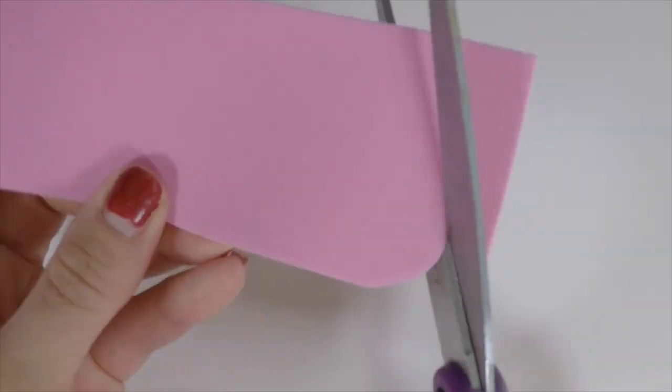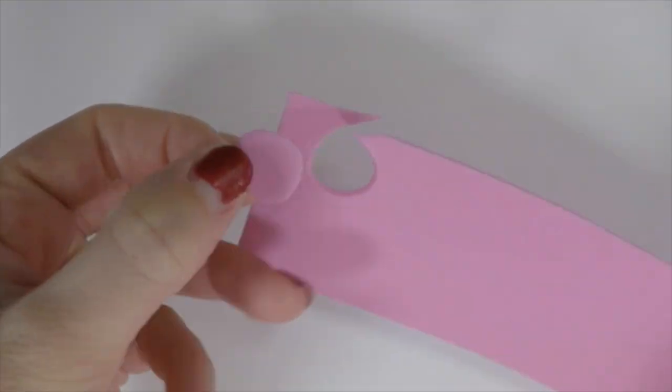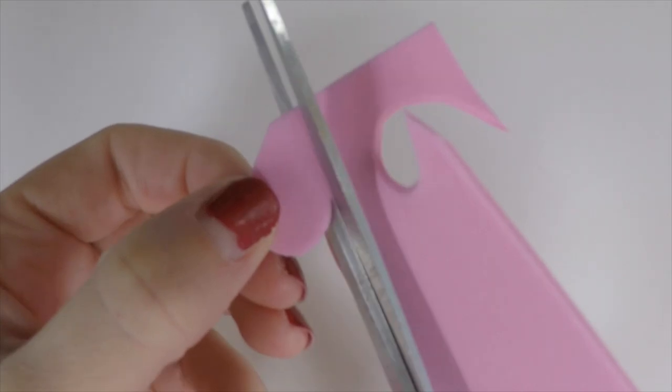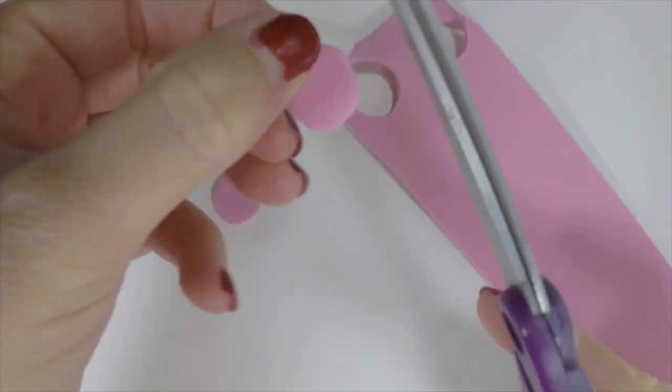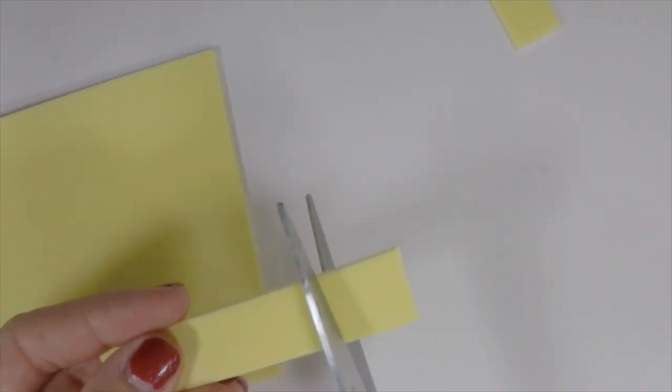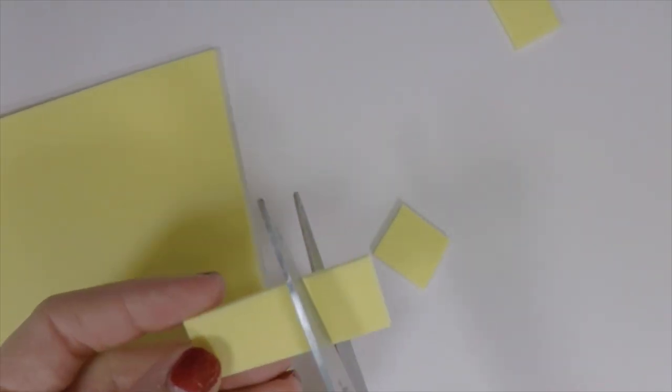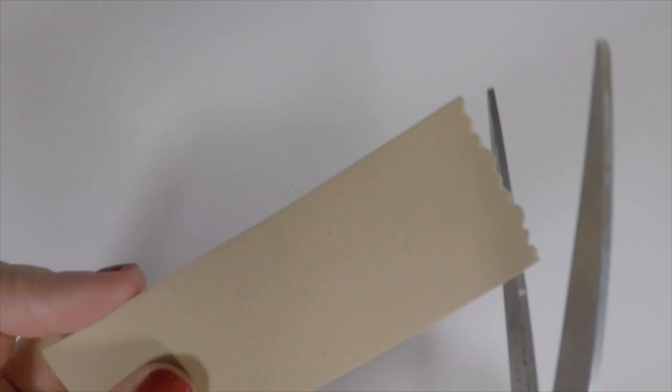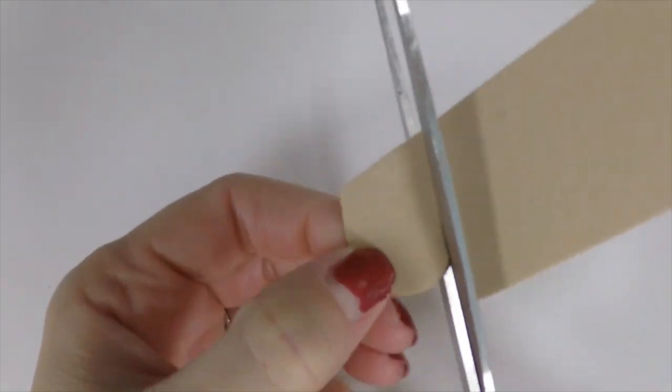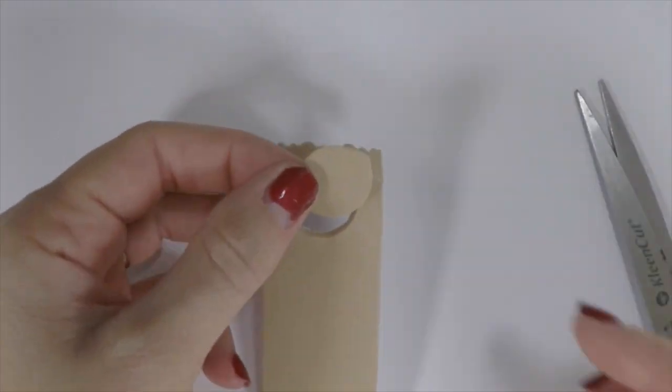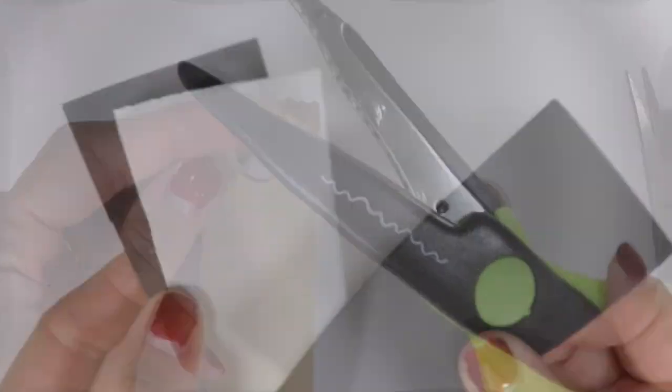For the turkey and American Lunchable, you'll want to take a piece of pink craft foam and cut the circles out for the turkey. Then for the cheese, cut small squares in a yellow or light yellow foam. For the crackers, cut circles to match the turkey and use scrapbook scissors if you want to give it a more realistic edge.